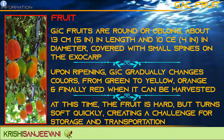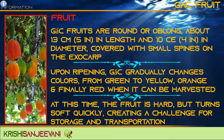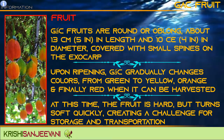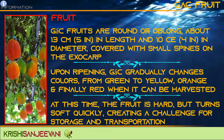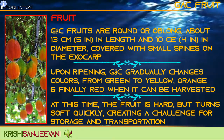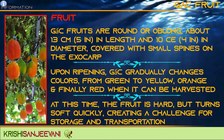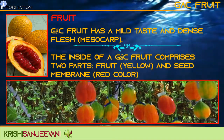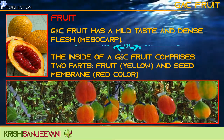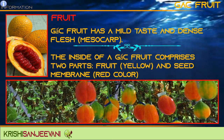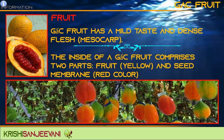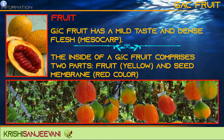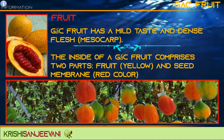Upon ripening, Gac gradually changes color from green to yellow, orange, and finally red, when it can be harvested. At this time, the fruit is hard but turns soft quickly, creating a challenge for storage and transportation. Gac fruit has a mild taste and dense flesh. The inside comprises two parts: fruit flesh in yellow and seed membrane in red color.